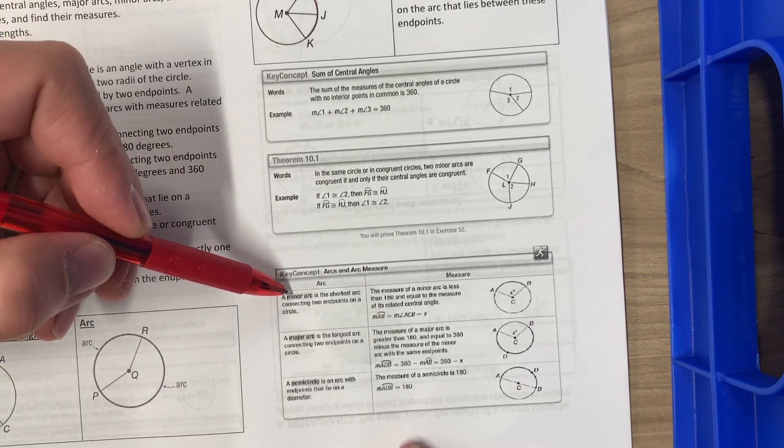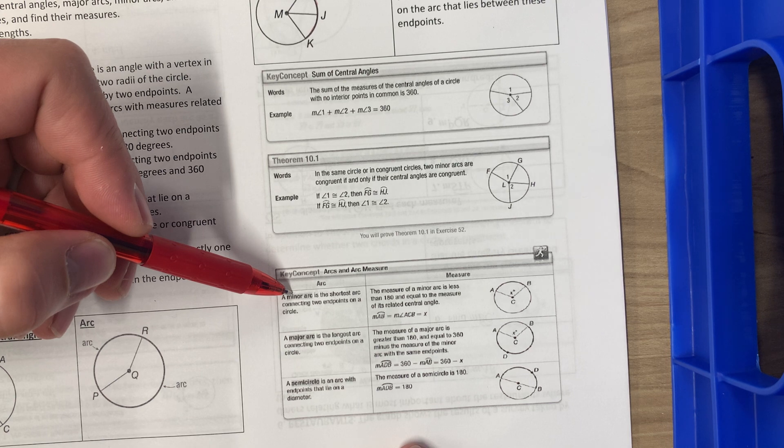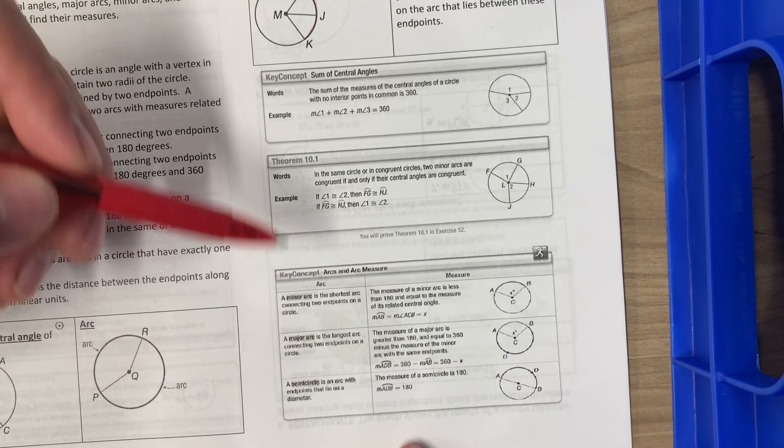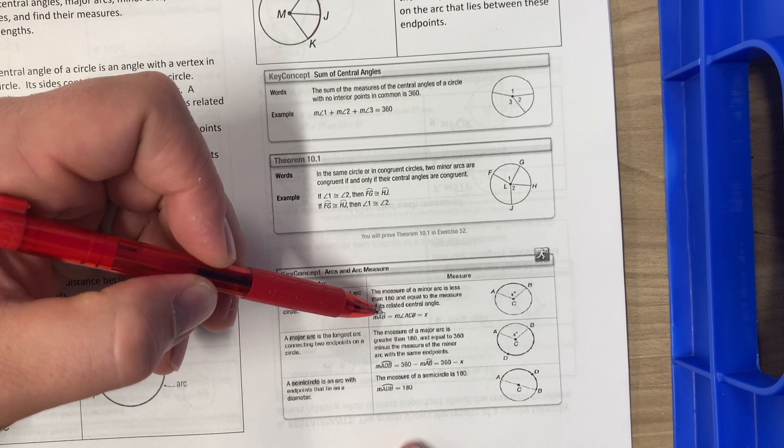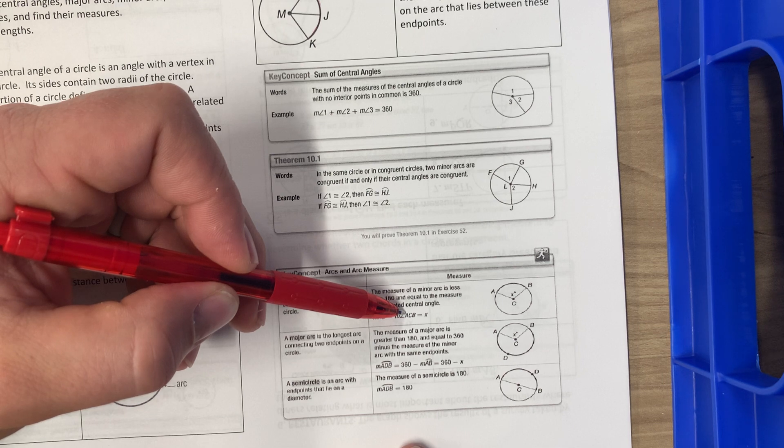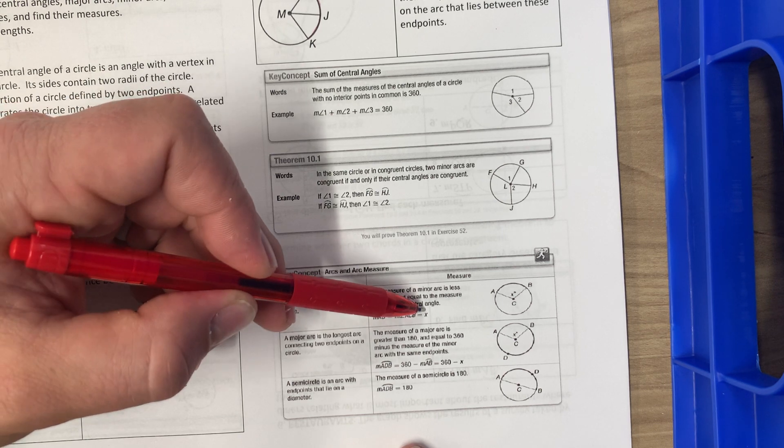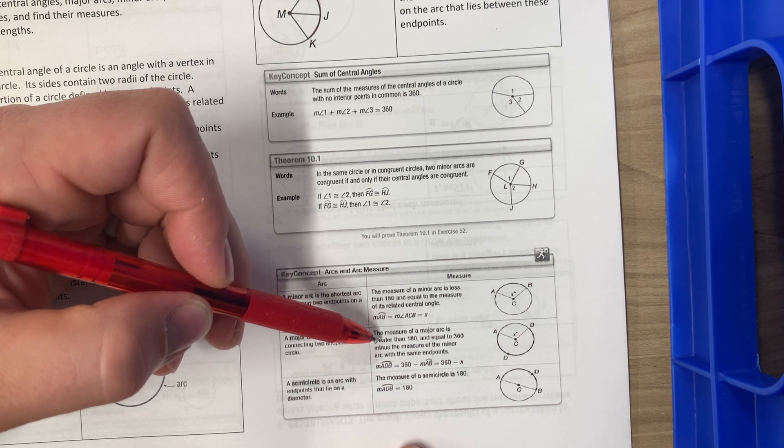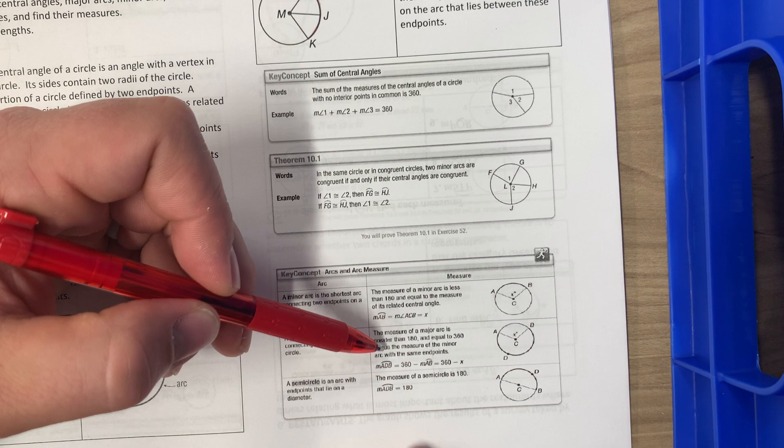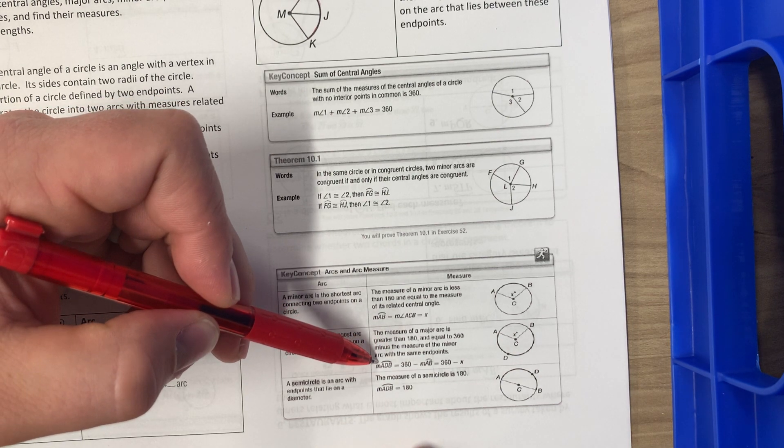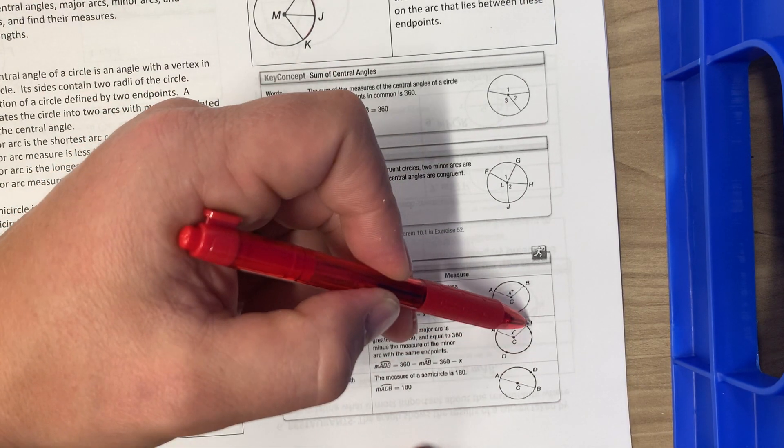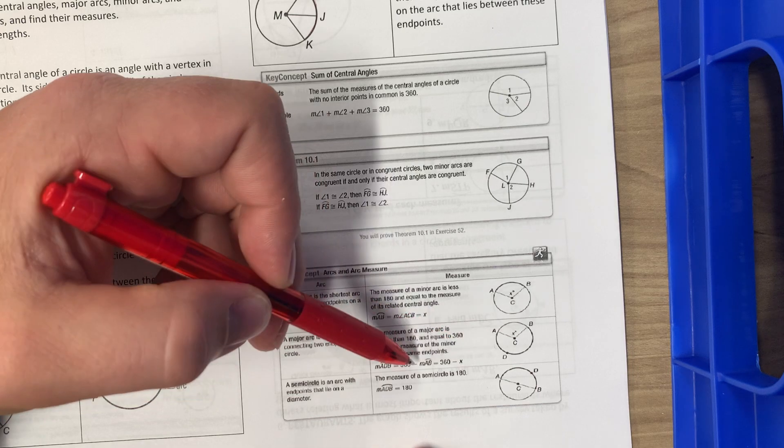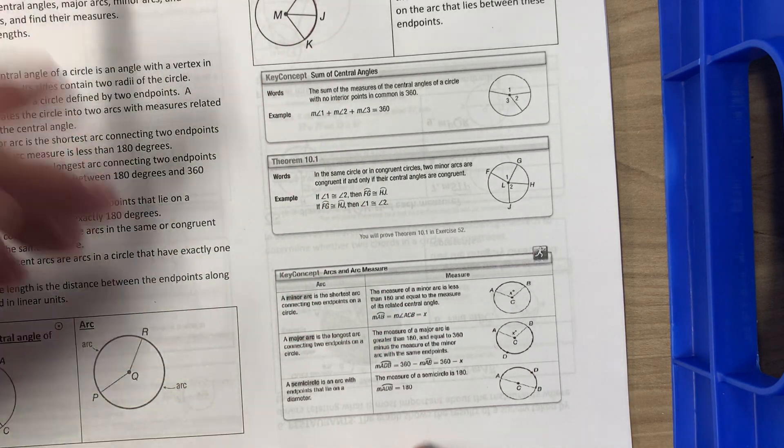Here are our arcs. A minor arc is the shortest arc connecting two endpoints on a circle. A major arc is the longest arc connecting two endpoints on a circle. So in this one, arc AB would be equal to angle ACB which is also equal to X. The measure of the major arc is greater than 180 and equal to 360 minus the measure of the minor arc with the same endpoints. So arc ADB, the big one, the major arc would equal 360 minus arc AB or 360 minus X. The semicircle is 180 degrees every single time.